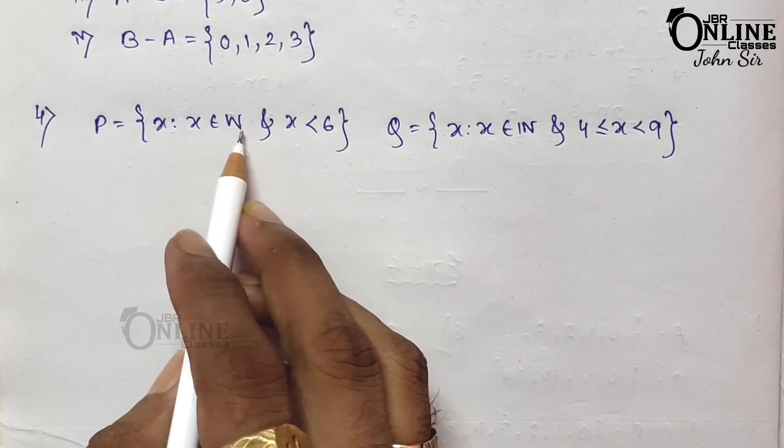A union B will be I, N, T, E, G, R, Y, C, K, and O. A intersection B — the common elements — are I, N, E, R, and G. A minus B: the elements in A but not B are T and Y. And B minus A: the elements in B but not A are C, K, and O.